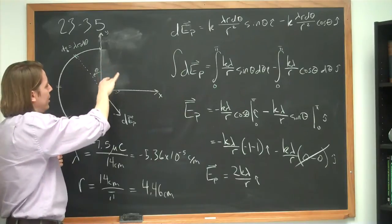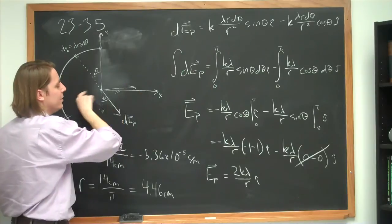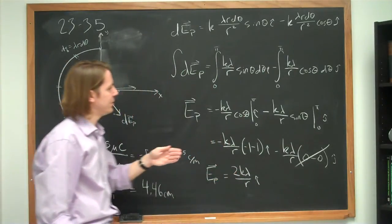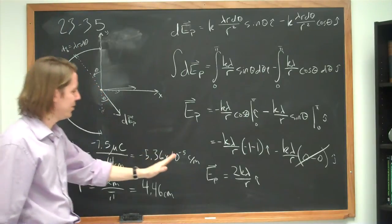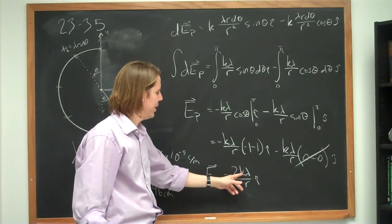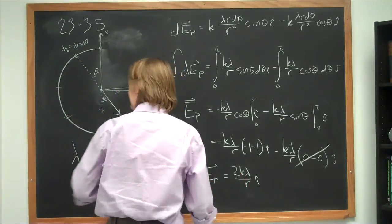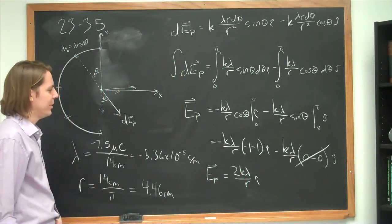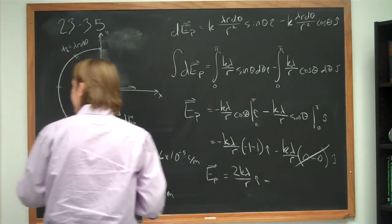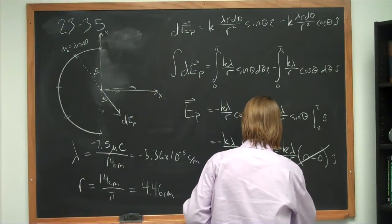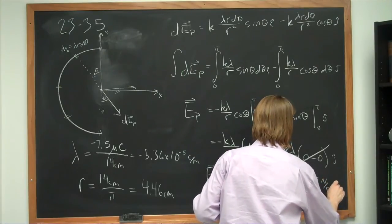So Ep equals 2k lambda over r i-hat. Adding all the vectors, only the horizontal components give a nonzero result. But remember lambda is negative: plugging in k = 9×10⁹, r = 0.0446 m, and lambda = minus 5.36×10⁻⁵ C/m, the answer is minus 2.16×10⁷ Newton per Coulomb i-hat.